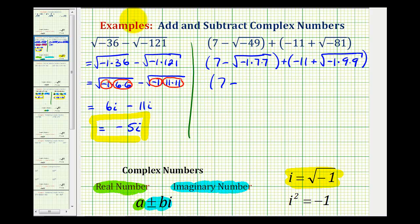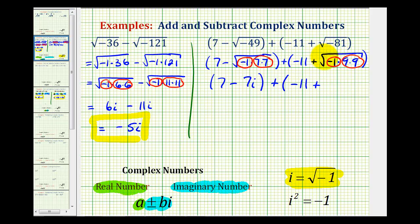We have 7 minus — this is going to simplify to a factor of 7 as well as a factor of i, so we have minus 7i. Plus, here we have negative 11, plus this simplifies to 9 and this simplifies to i, so we have plus 9i. Now that we've simplified these to complex numbers, we can go ahead and add them by adding the real numbers and the imaginary numbers.